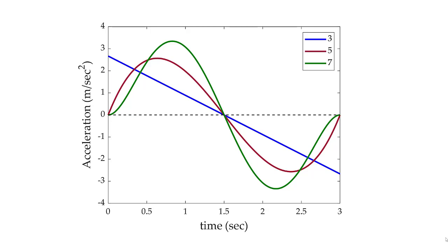Why is this important? Let's take a look at jerk. The minimum jerk hypothesis states that for most human movements, we want to try to minimize jerk, particularly around the endpoints. We have relatively high amounts of jerk for both the blue and red curves, but the green curve actually starts and ends with zero jerk. We don't want a very abrupt start and stop — we want a smooth start and stop, which dictates that we minimize jerk at the beginning and end of movement.